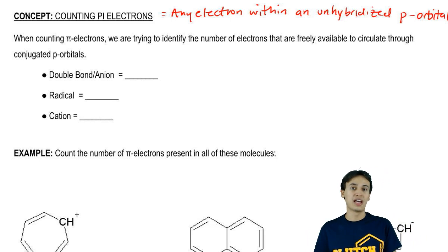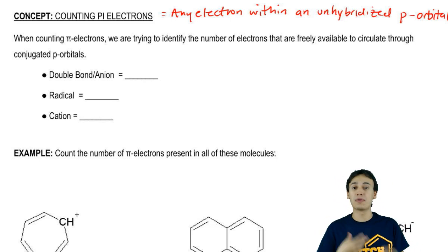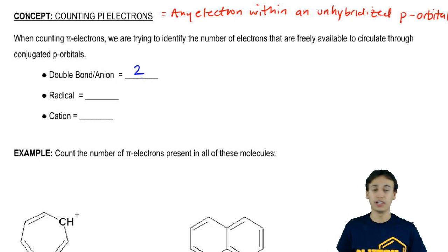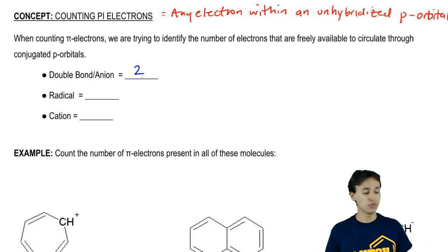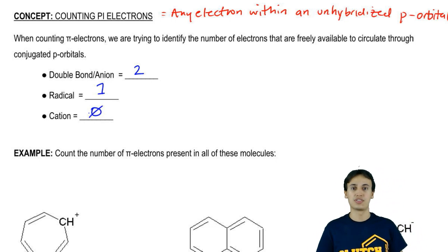We can learn that double bonds, radicals, and cations all contribute different amounts of electrons to pi electrons. Double bonds and anions contribute two pi electrons each. Radicals contribute one pi electron, and cations, because they're empty orbitals, contribute zero electrons.